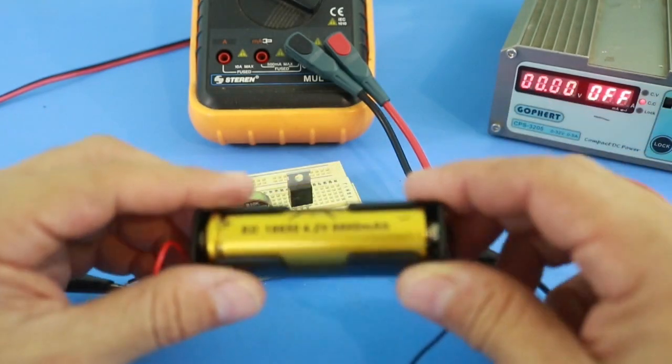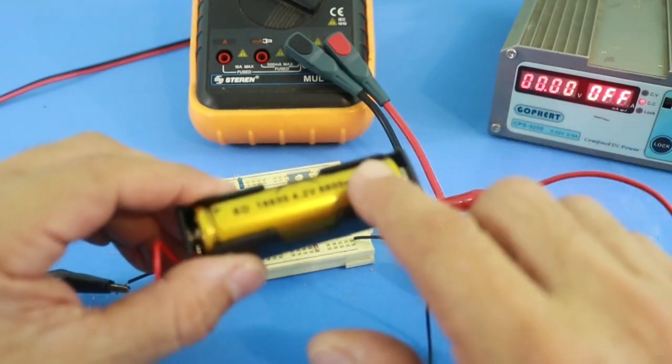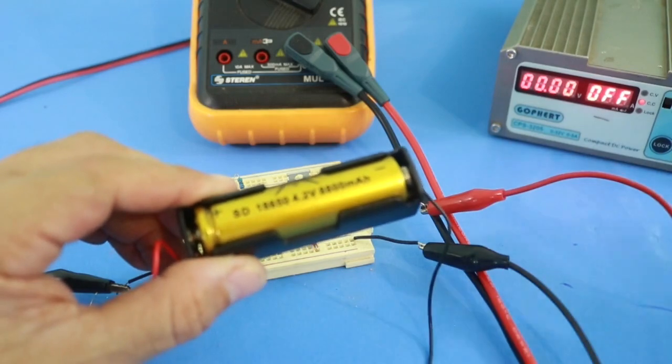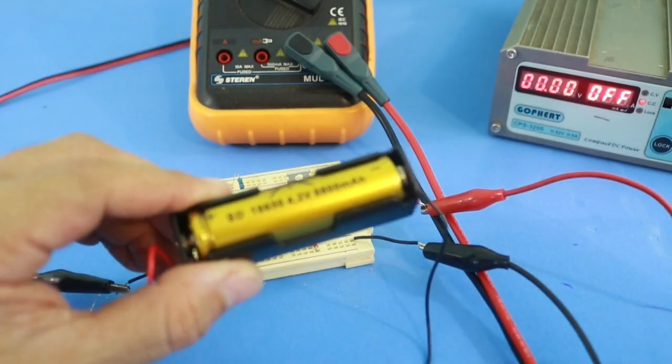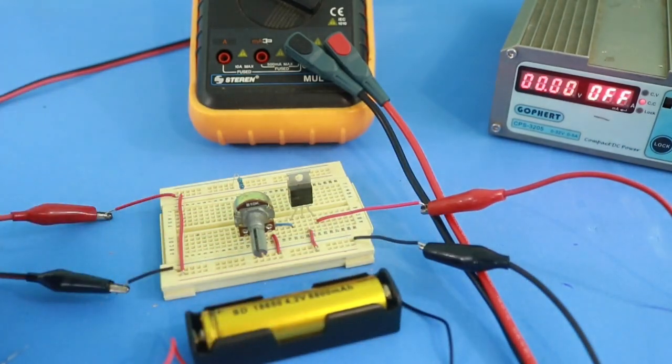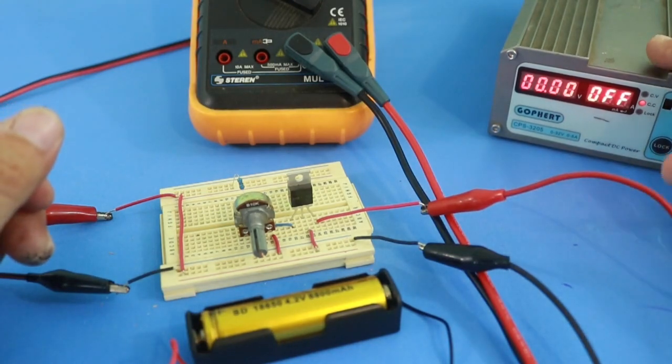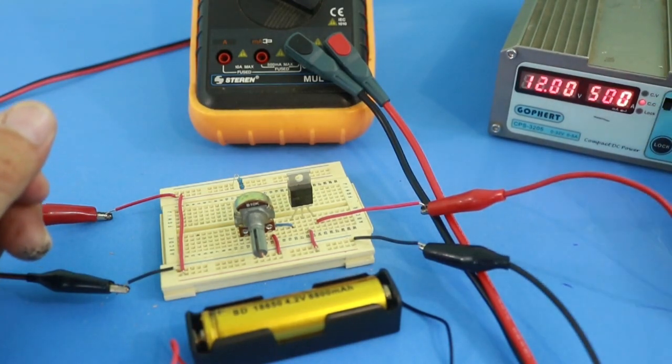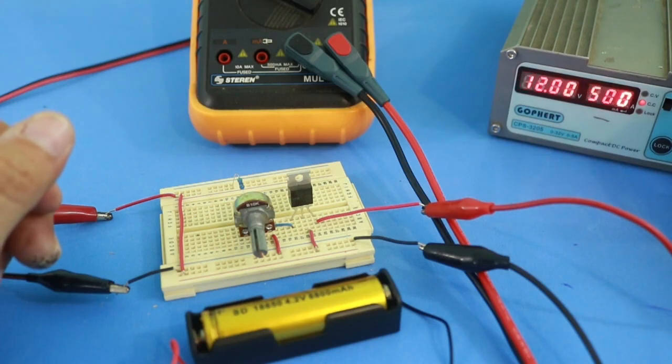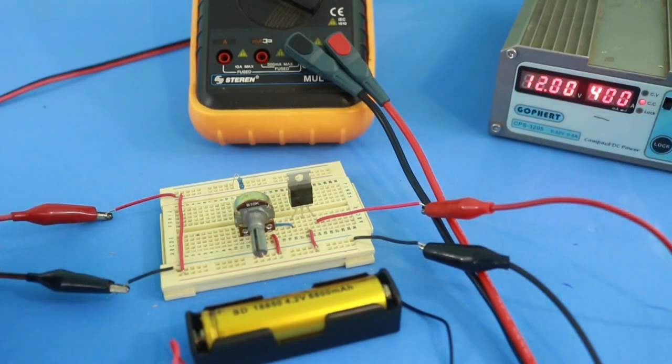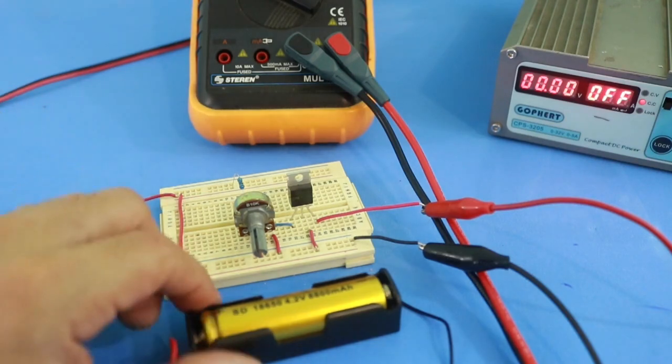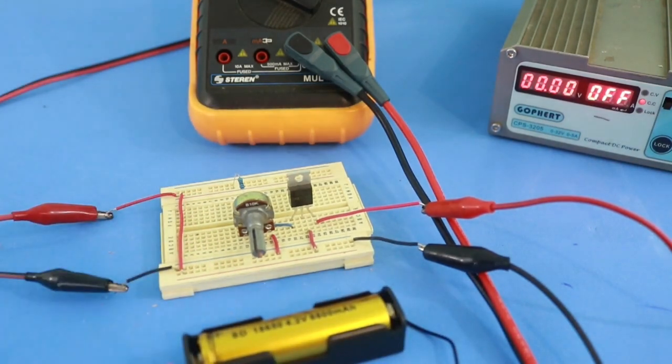So we need to charge this battery at half of that, which is 400 mAh. Therefore, we need to adjust our power supply to 400 mAh. Right now it's at 500 mAh. Let's put it at 400 mAh. And now we can connect our battery to the charger output.